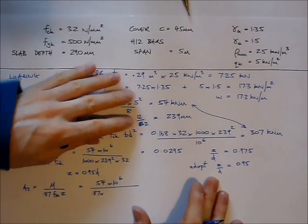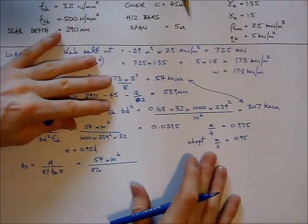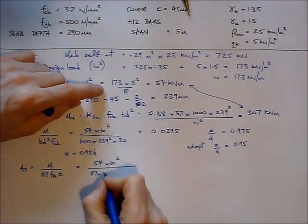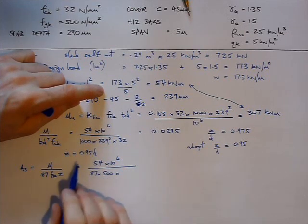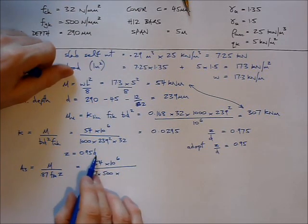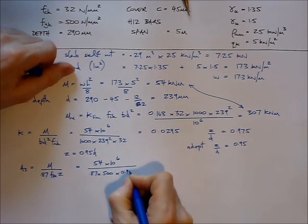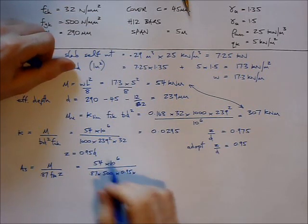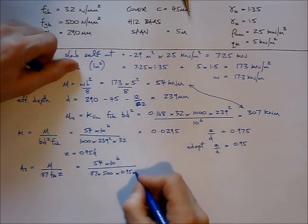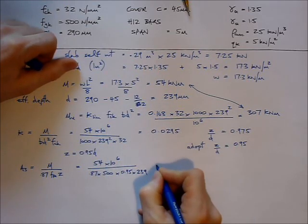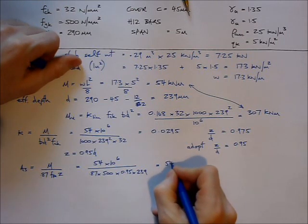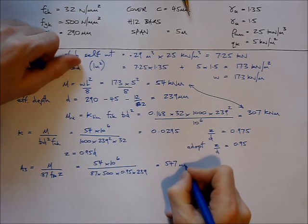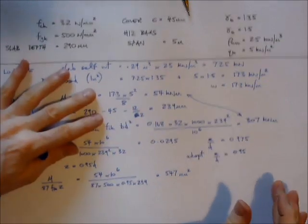And multiply that by Z, which is the lever arm, which I know is 0.95d. 0.95 times d, which we calculated earlier at 239. Multiply that out and I get a value of 547 millimeters squared.